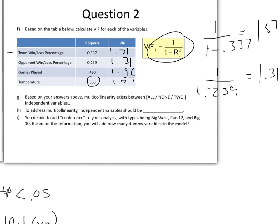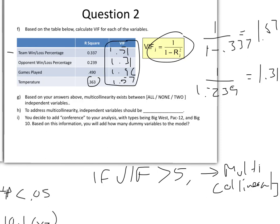Based on these answers for the VIF, multicollinearity exists between all, none, or two of these independent variables. In this case, if VIF is greater than 5, then we would have multicollinearity. Since none of these are greater than 5, we would say none here. However, if we find multicollinearity, what should we do? We need to remove independent variables and rerun the model. That's what we would need to do there.